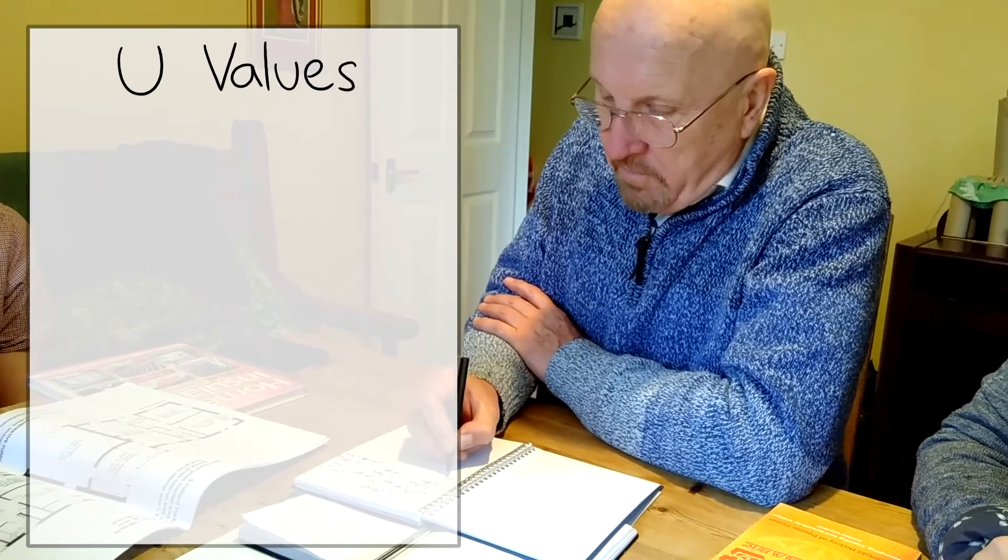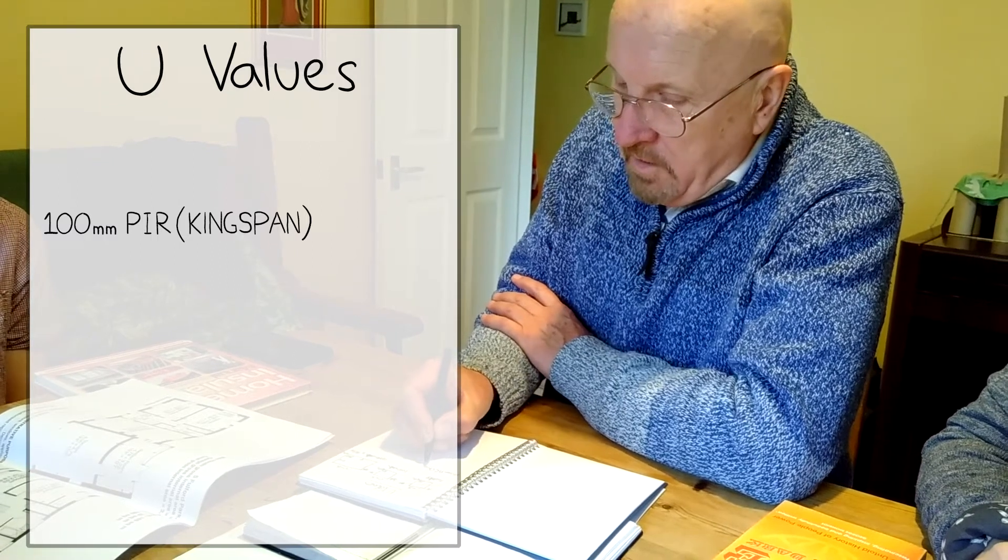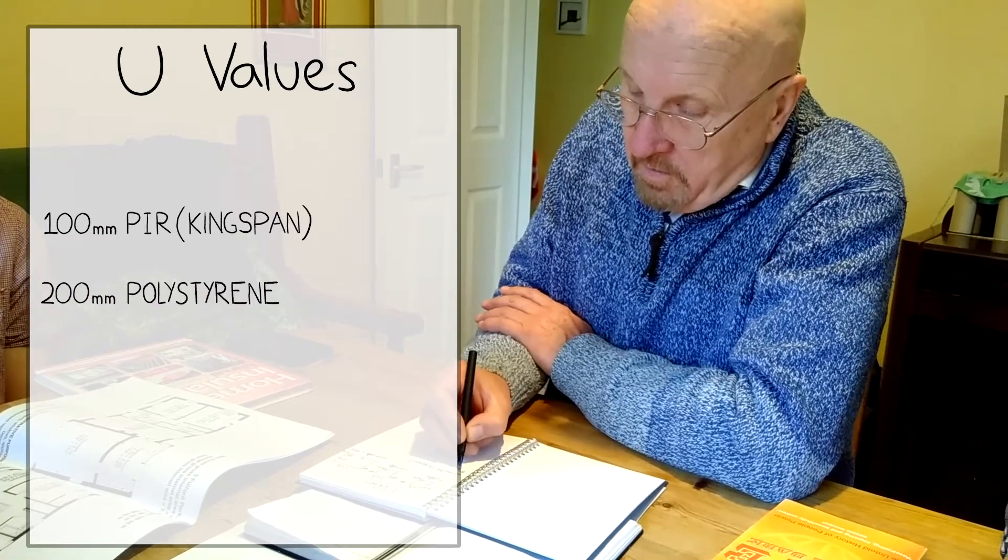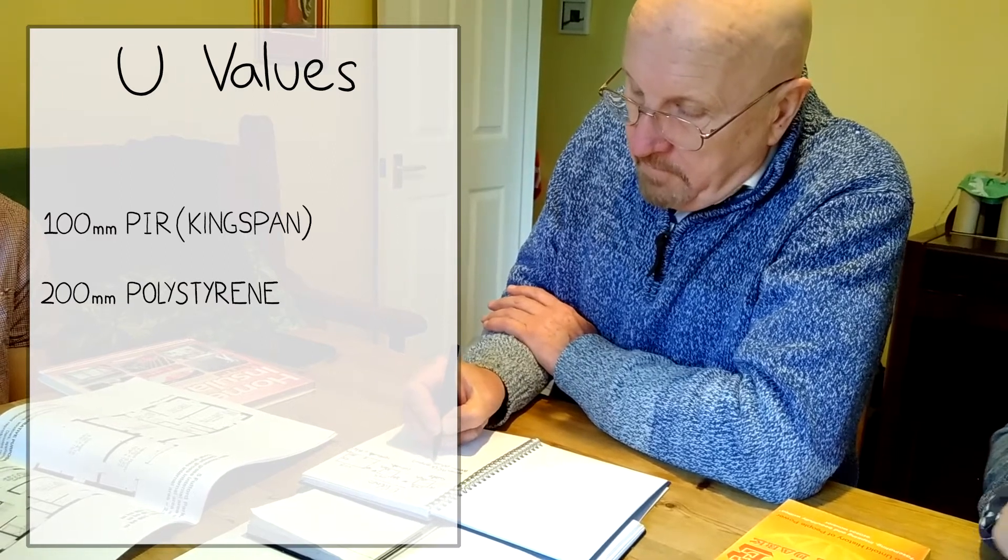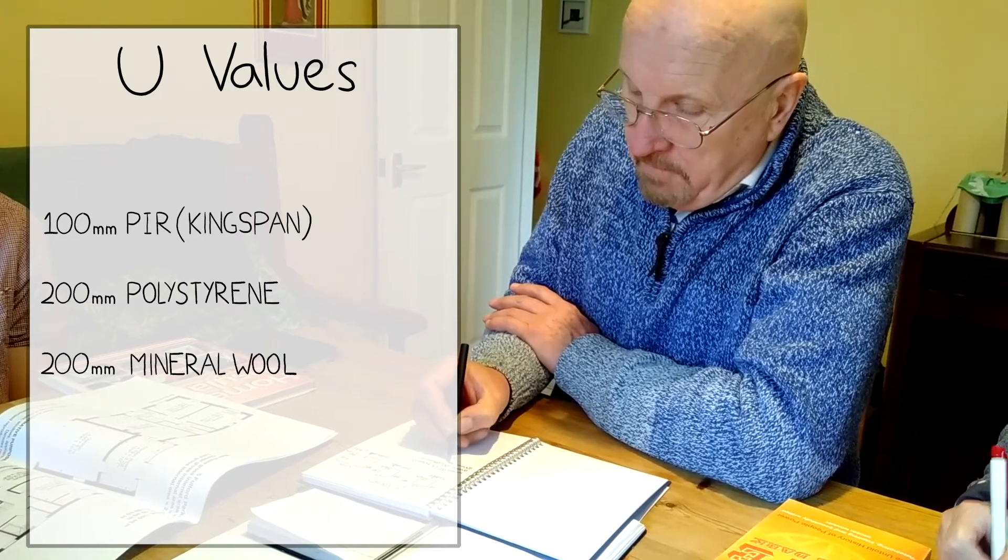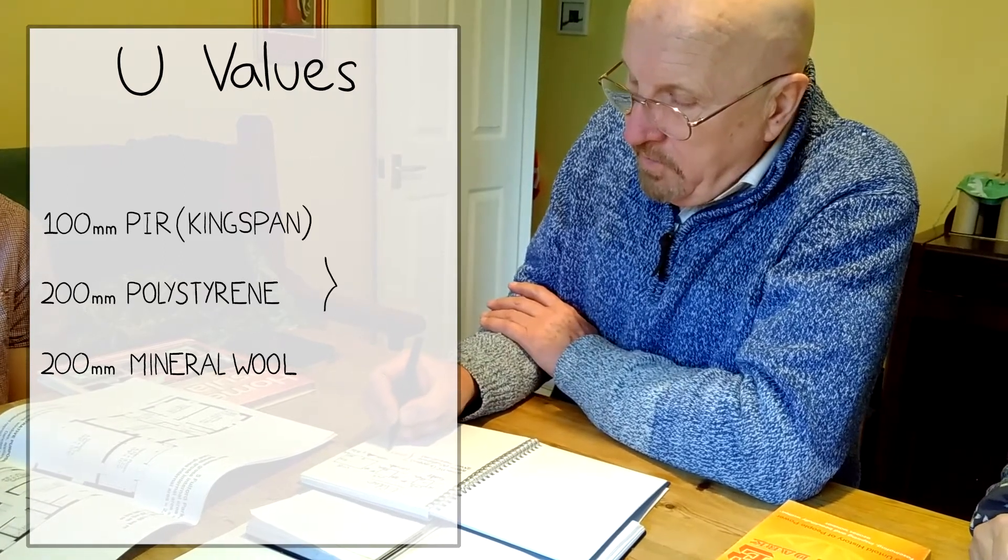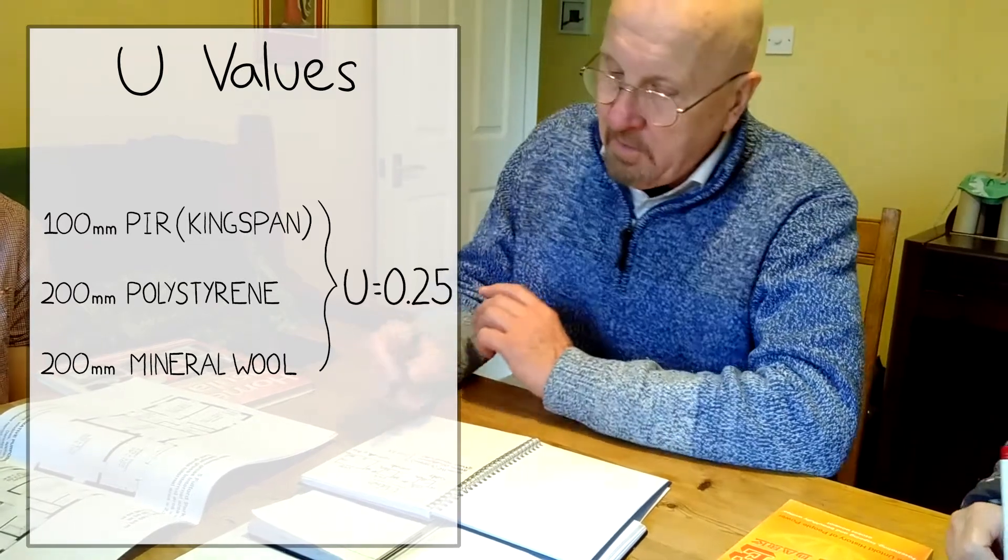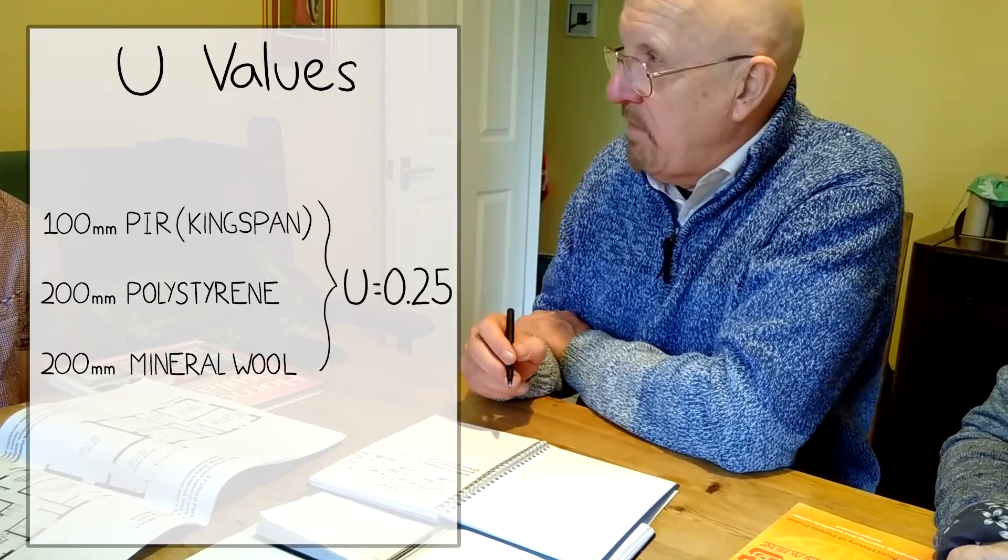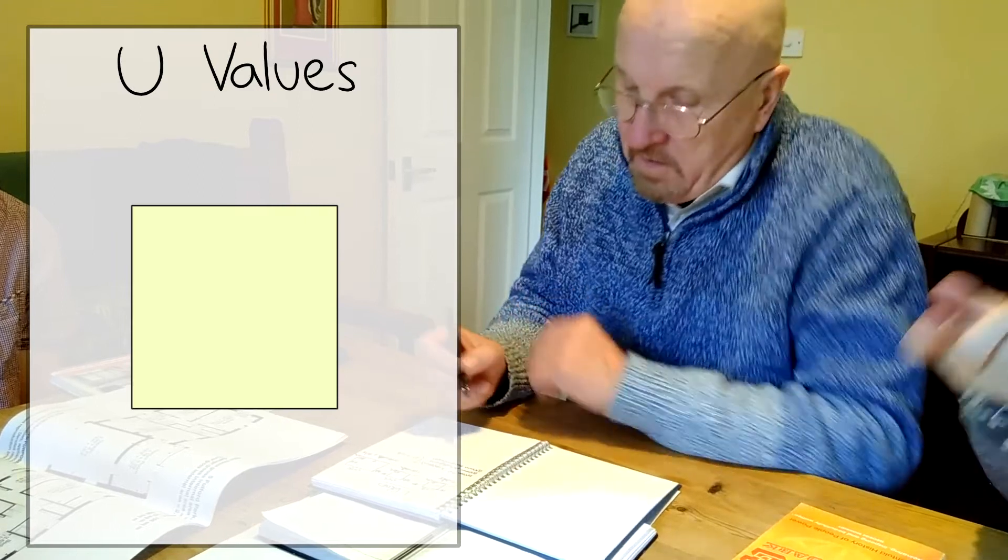Of the choices we've got we could have 100 millimeters of PIR. That's kind of the family name of lots of brands. You probably know the Kingspan brand. Or 200 millimeters of polystyrene. Or 200 millimeters of mineral wool. Each give us a U-value of about 0.25. And I'm kind of making round numbers here. There are differences in the different brands of material that you get. But that's essentially what we get. So let's say we put 100 millimeters of PIR onto this surface and see what it does.